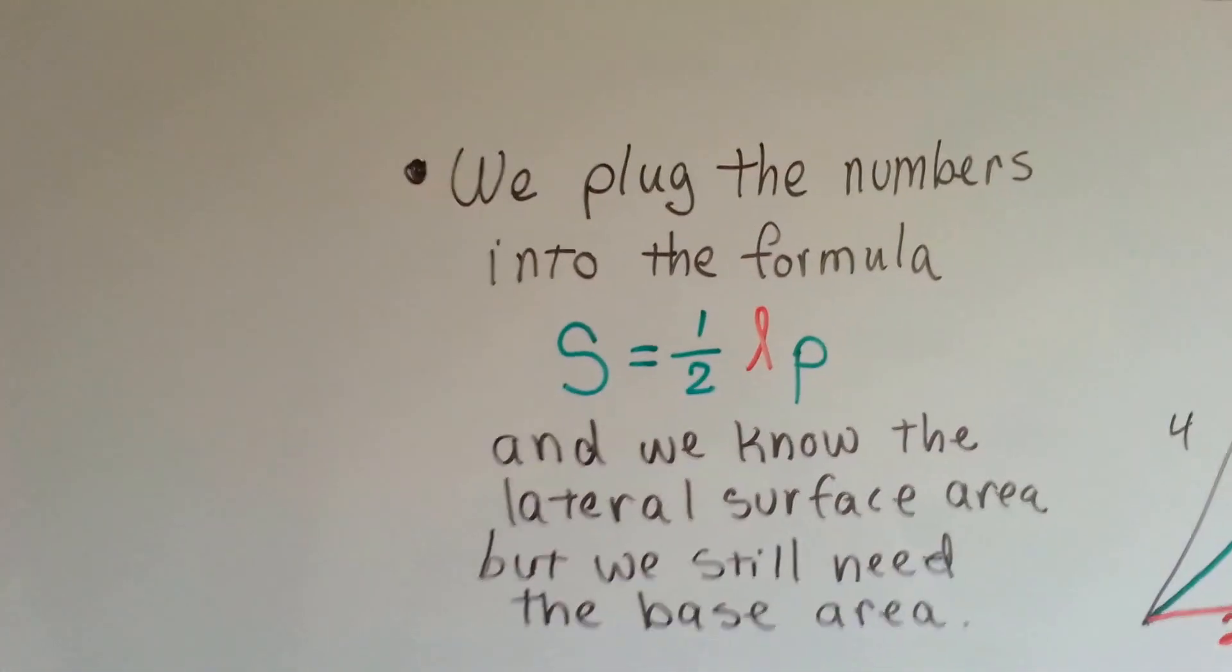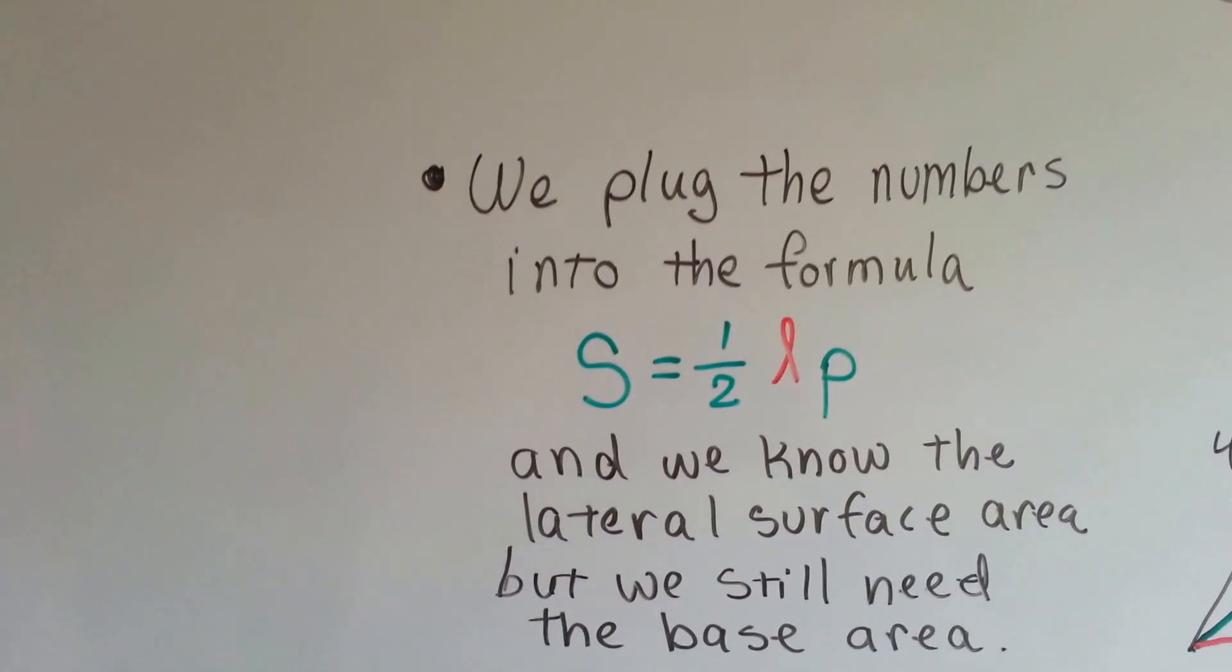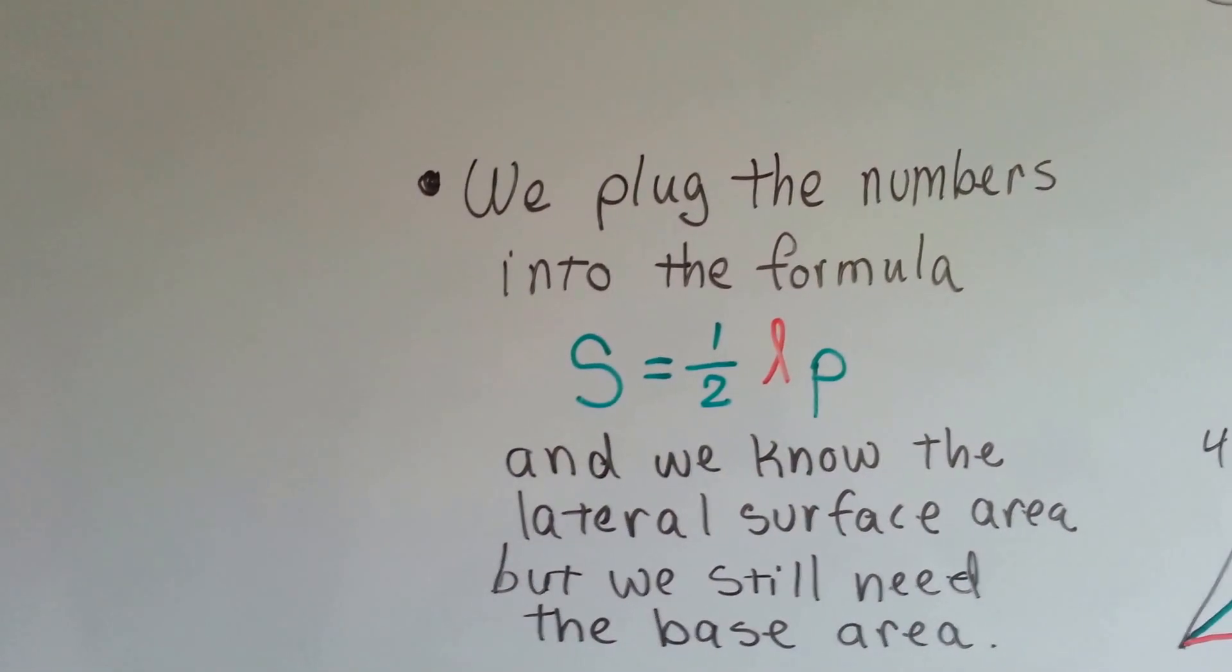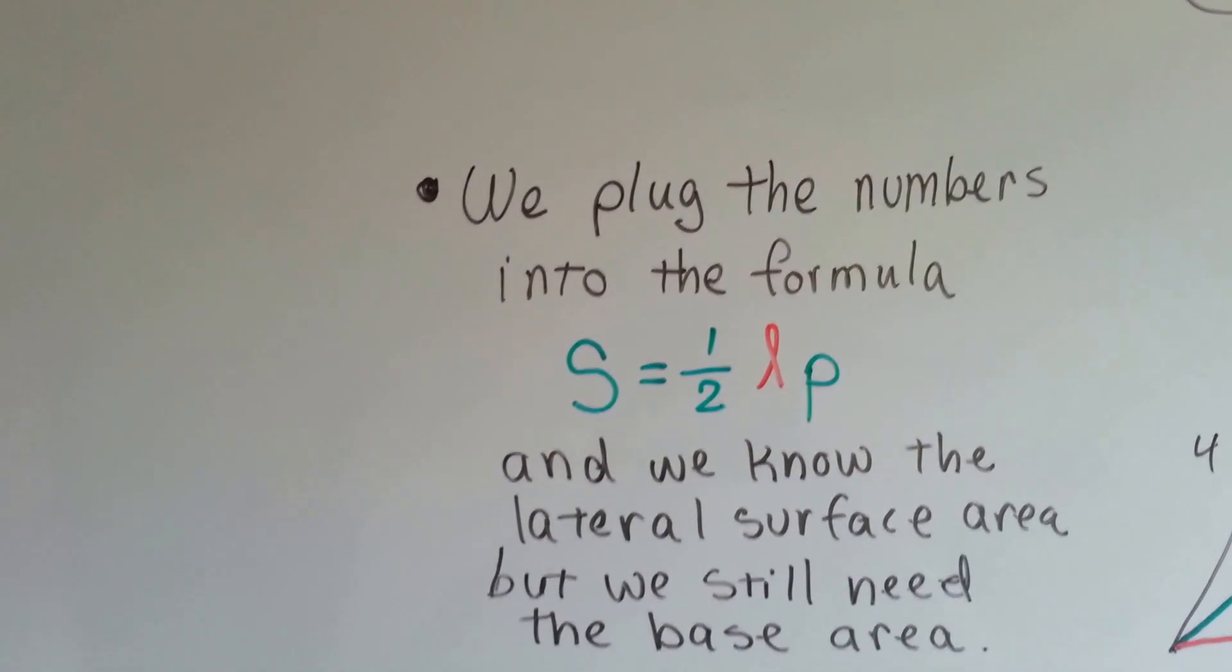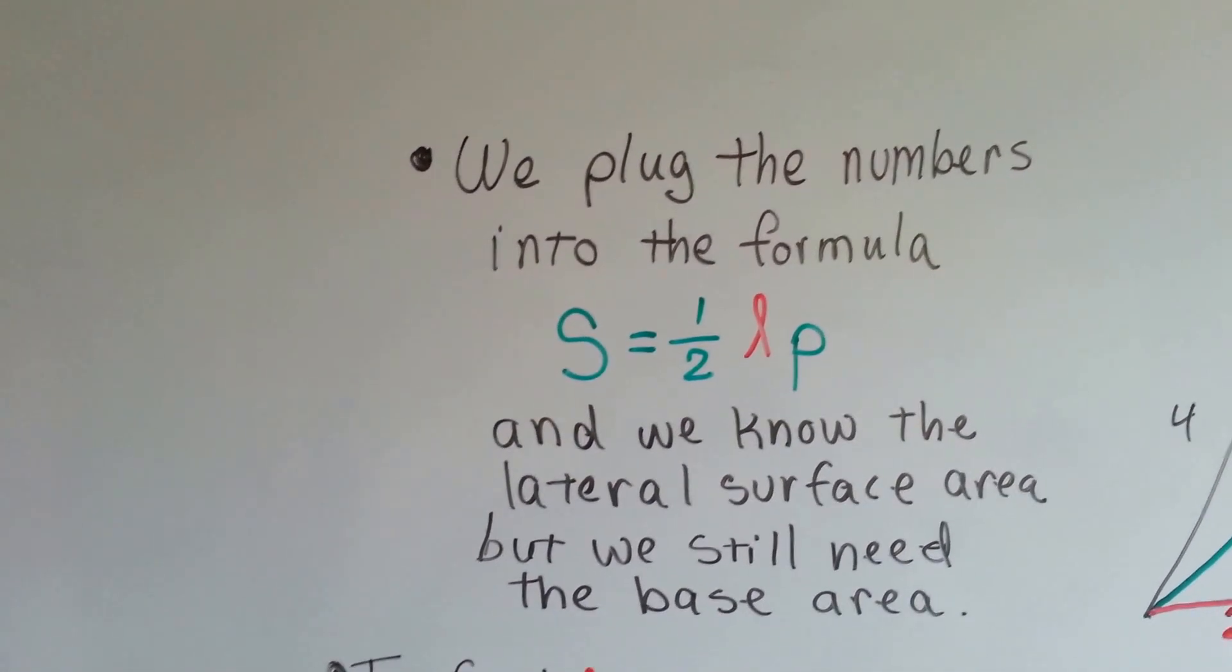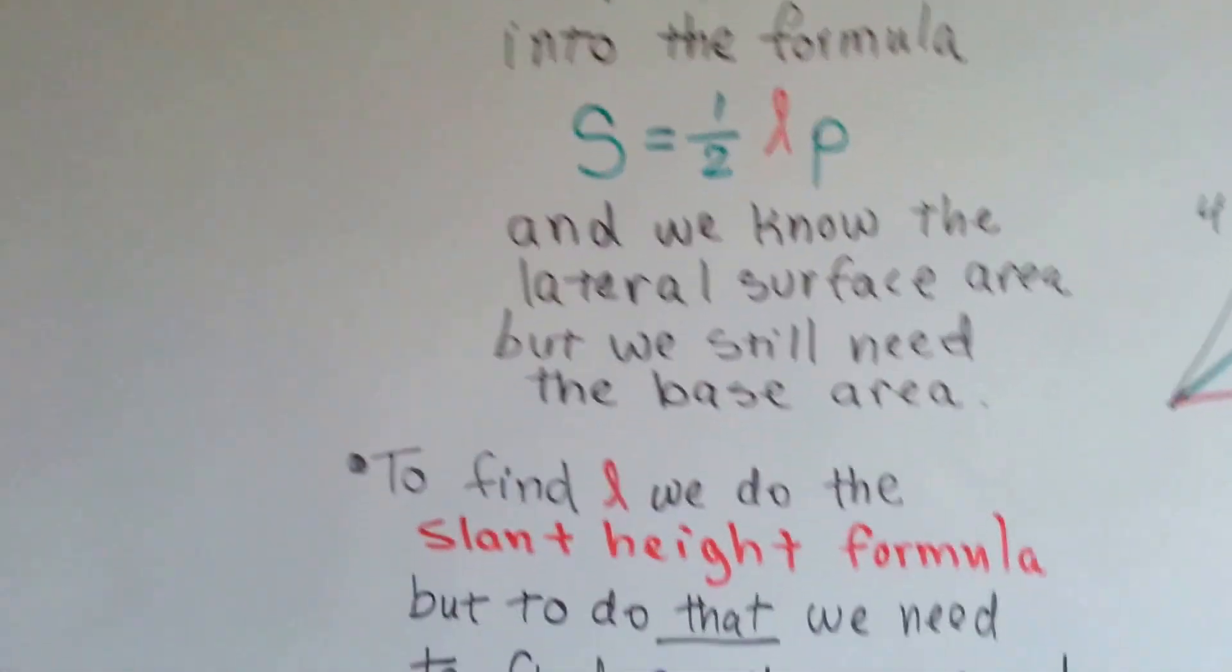We plug the numbers into this formula, s equals half lp, which is the surface area is equal to half of the slant height times the perimeter. And we know all the lateral surface areas, but we still need to add the base area.